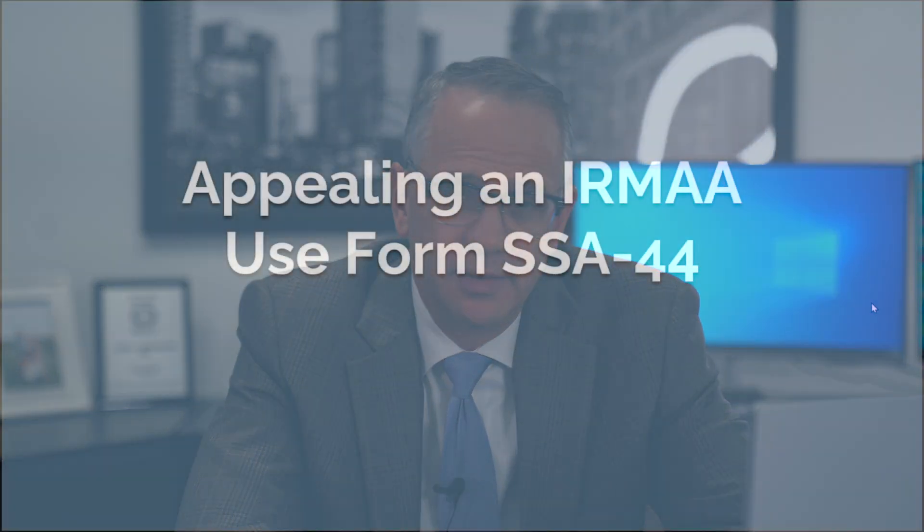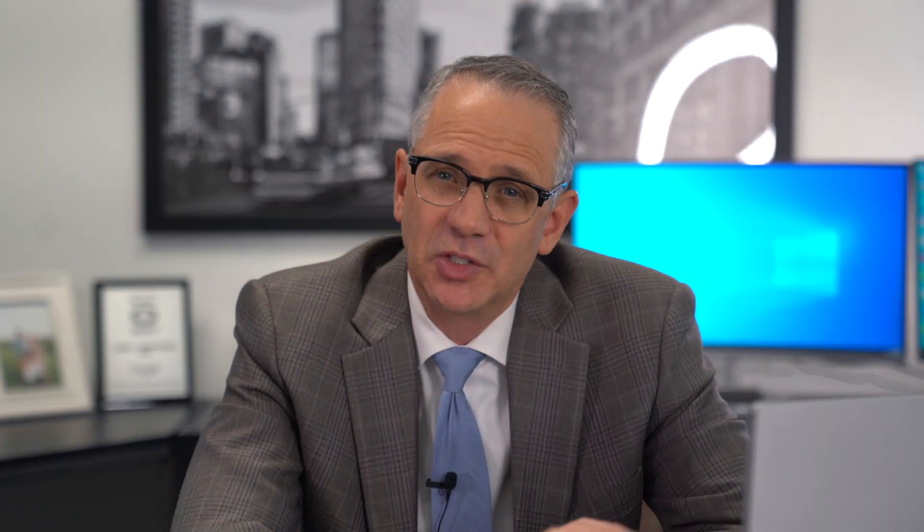If your income is high and it's caused IRMAA to kick in and you're being charged, there is an appeal process if your income is going to drop the next year. You're going to want to use SSA Form 44 to appeal the IRMAA surcharge. There are only certain things that they're going to allow you to appeal — if you stop work, retiring, and so forth. So you can appeal if there's a reason to do so, but after each year they are going to look at the modified adjusted gross income, and it would come down by itself eventually if your income truly comes down.